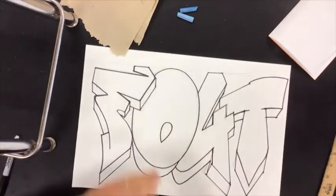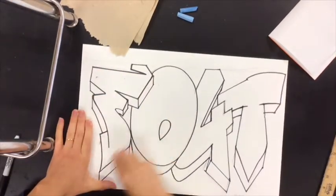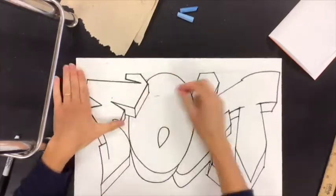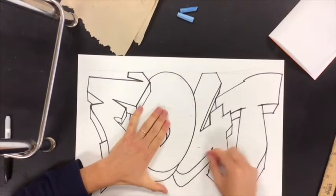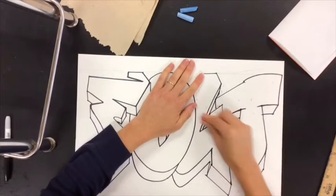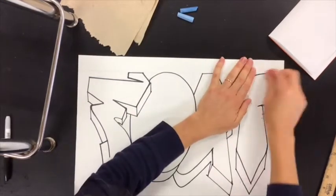Once you're finished adding your shadows or 3D effects and your graffiti looks just the way you would like it, you can erase all of your lines and then be ready to add color.